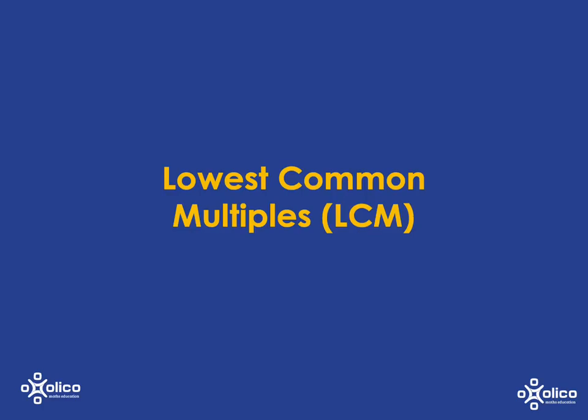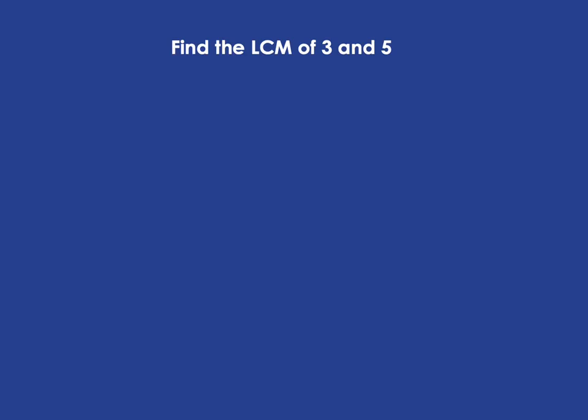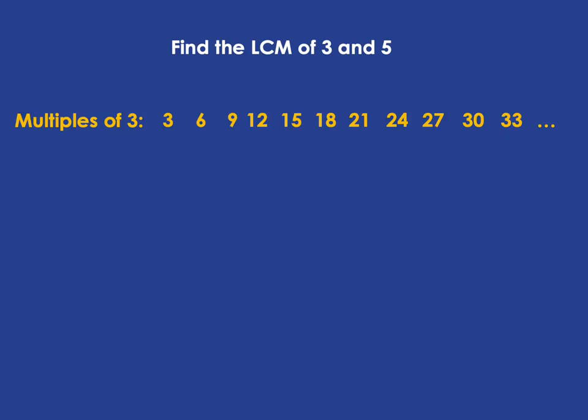We've been looking at multiples, but now we want to look at the lowest common multiple. We're going to use the example of finding the lowest common multiple of three and five. The multiples of three are three, six, nine, twelve, and they go on forever — that's why you put the little dots at the end. The multiples of five are five, ten, fifteen, twenty, and they go on forever.